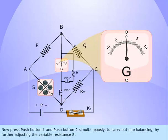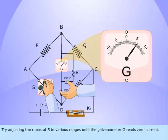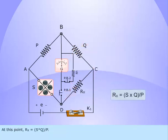Now press push button 1 and push button 2 simultaneously to carry out fine balancing by further adjusting the variable resistance S. Try adjusting the rheostat S in various ranges until the galvanometer G reads 0 current. At this point, Rx equals S into Q by P.